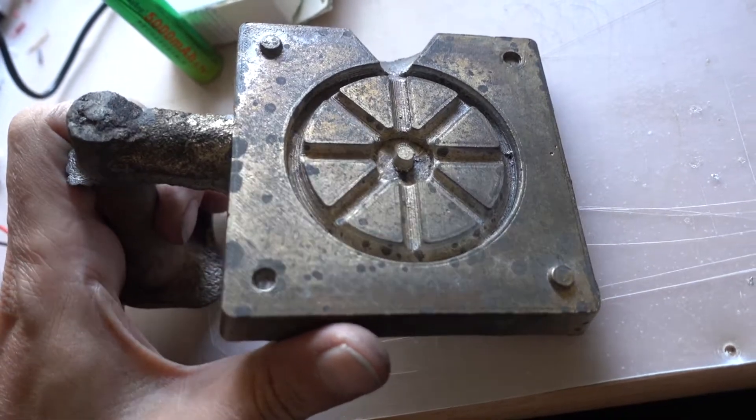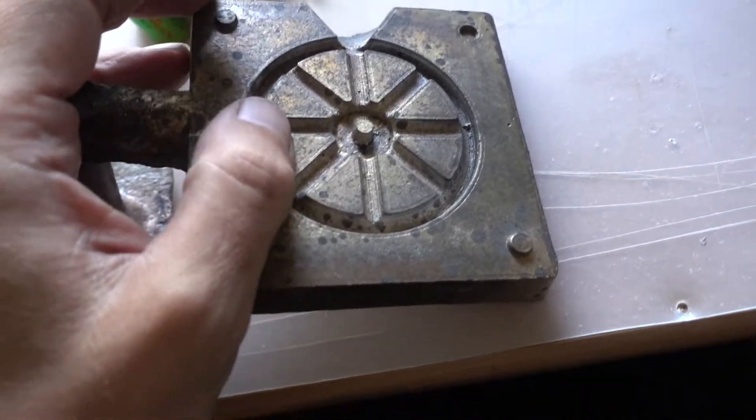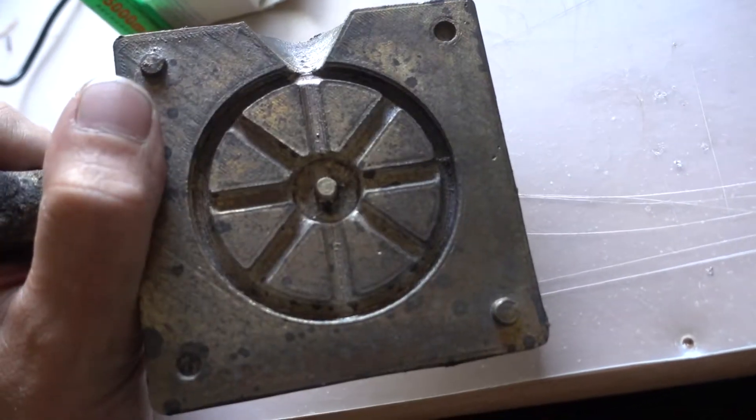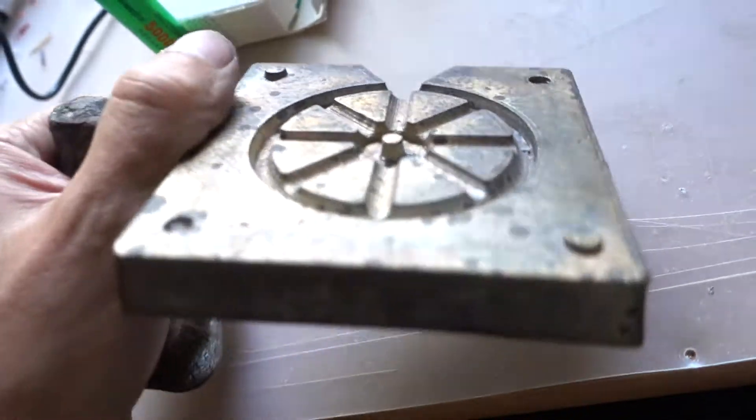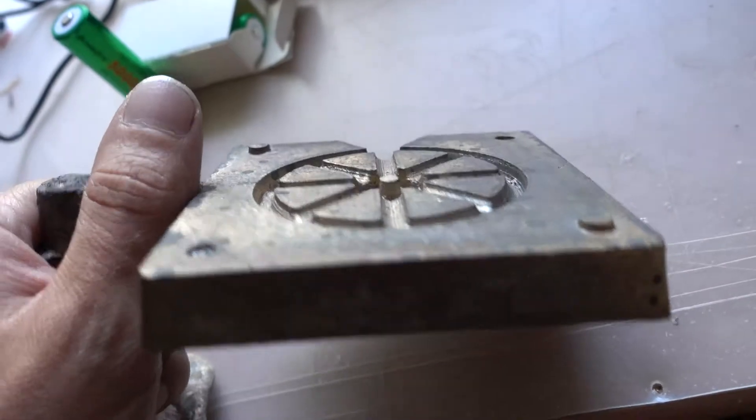If I would just need one part or so, it wouldn't be any use to make a permanent mold. So that's the update on that zinc wheel experiment.